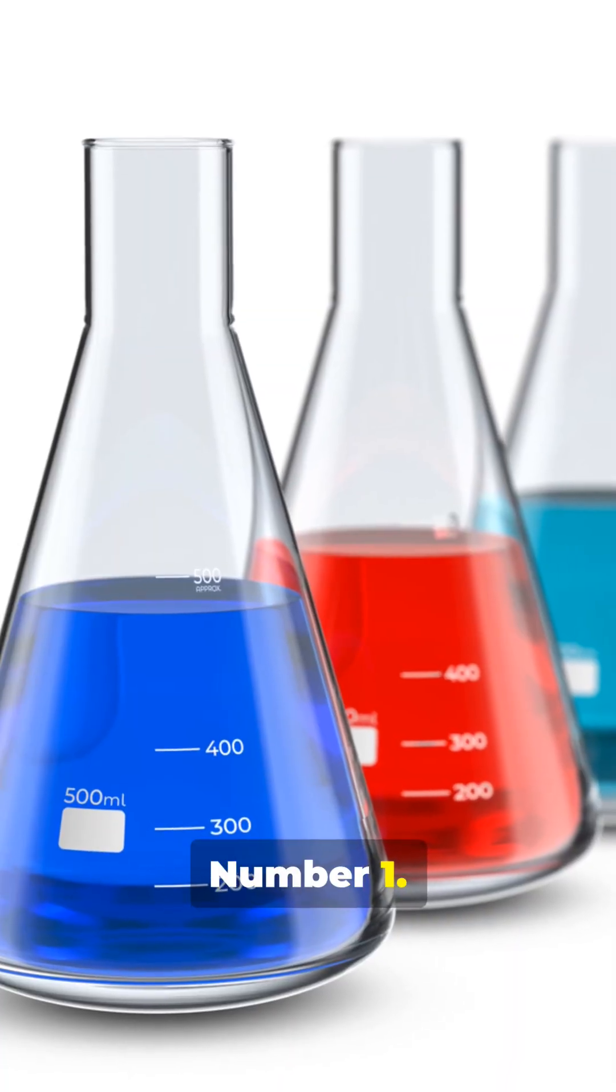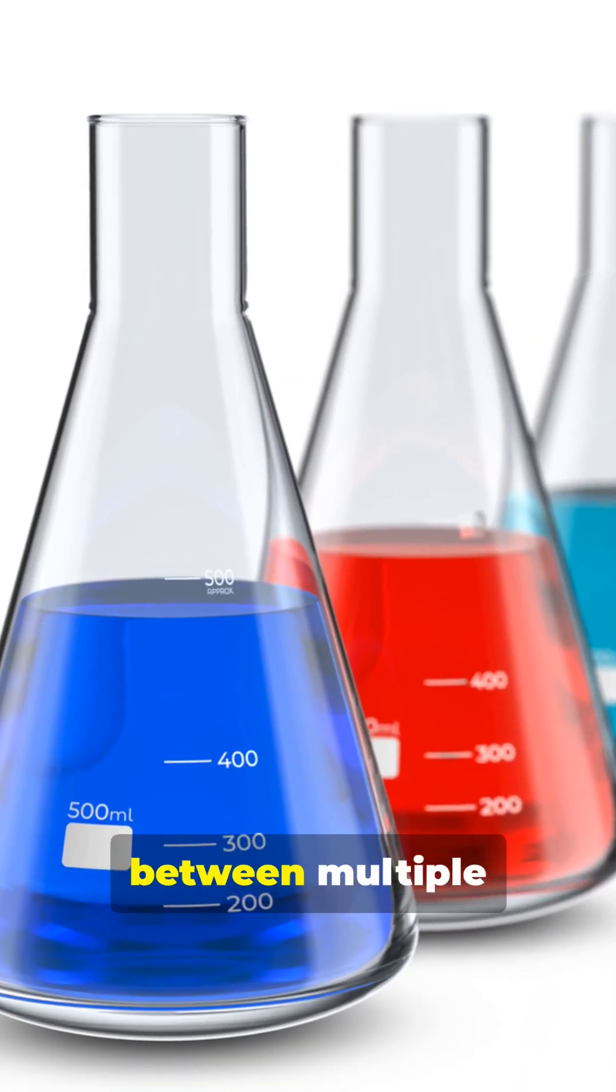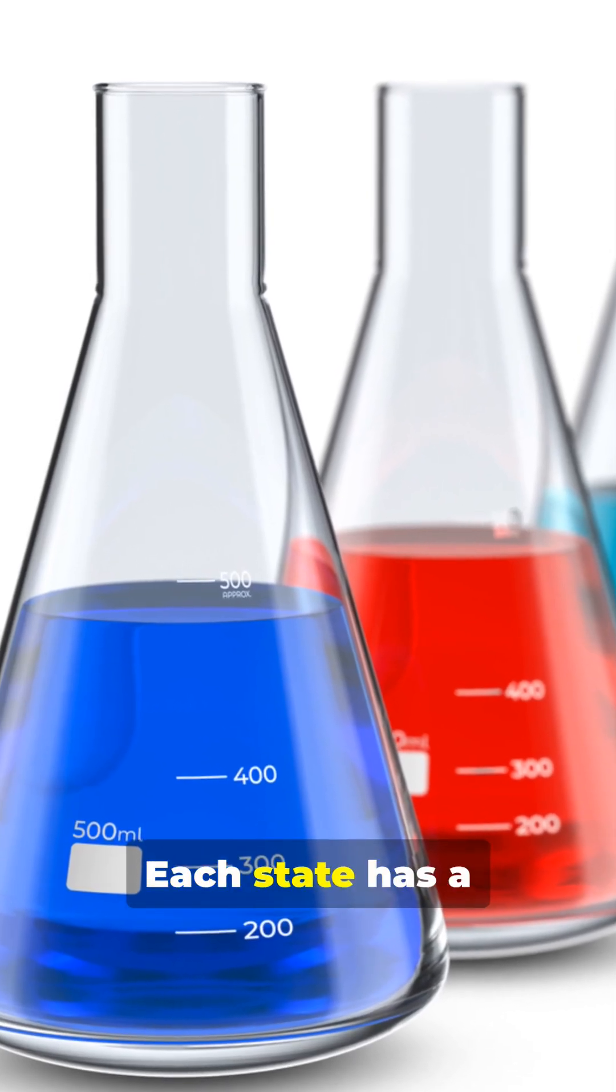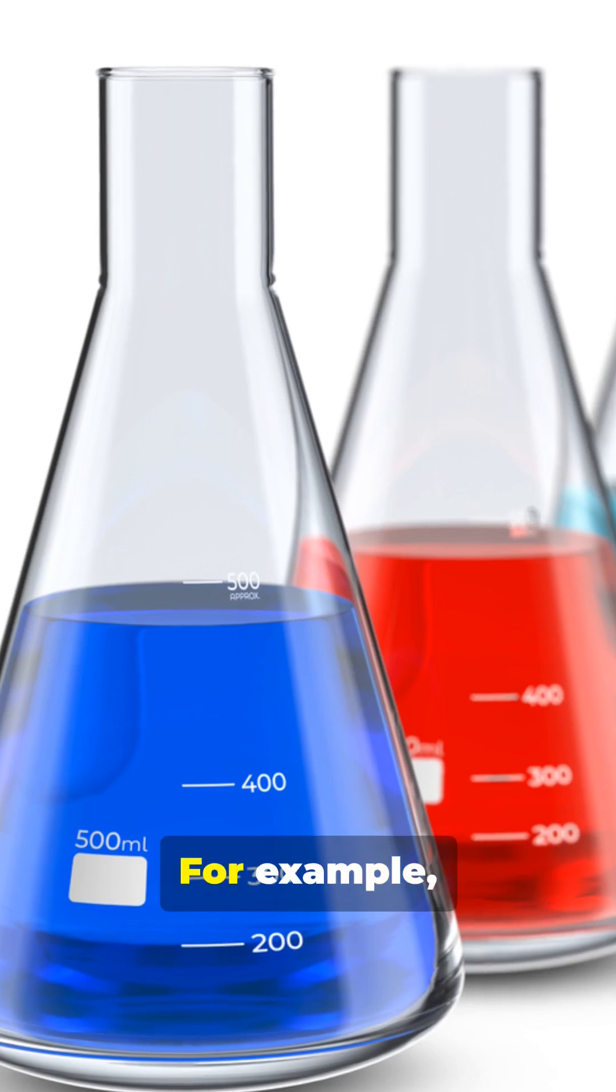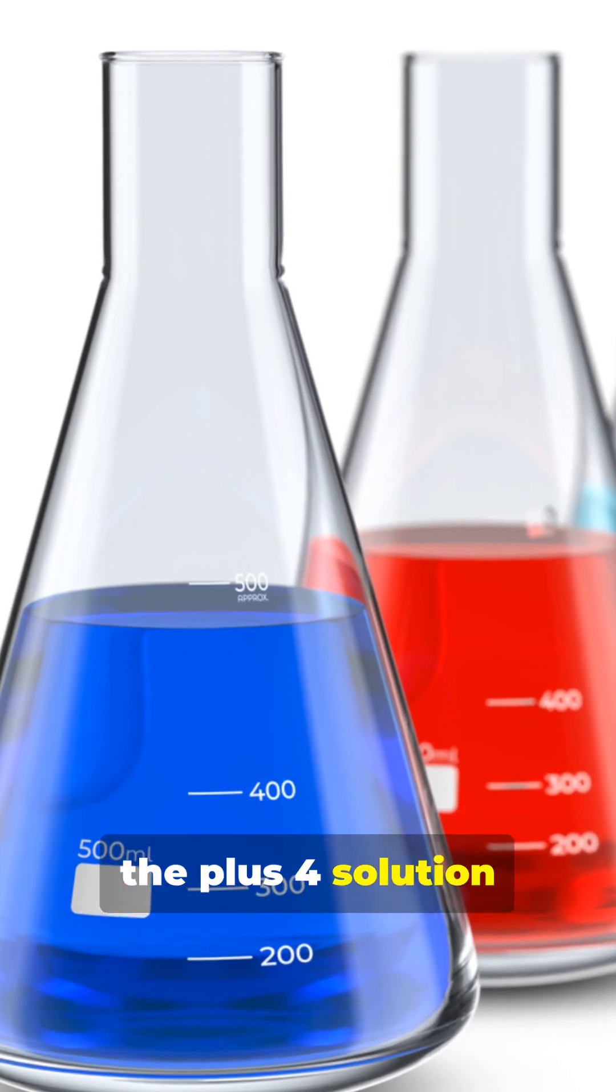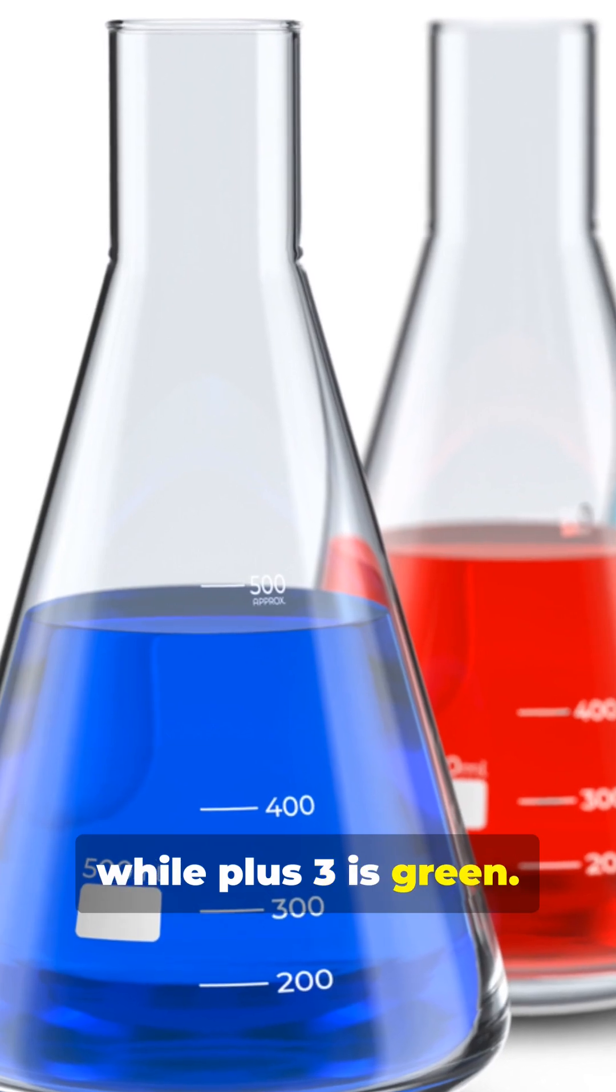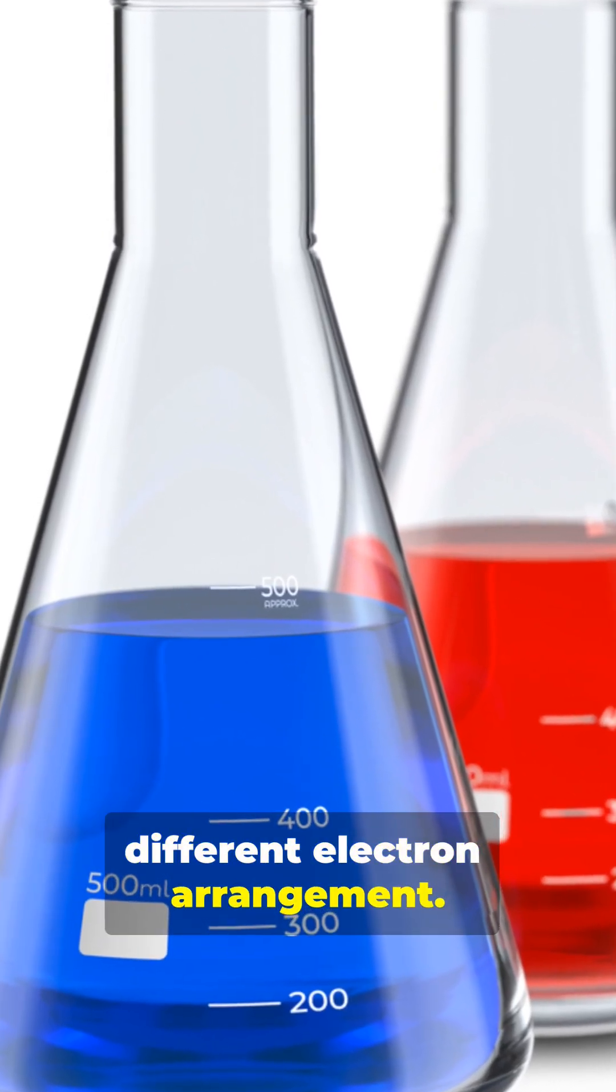Number one. When dissolved, vanadium can switch between multiple oxidation states. Each state has a different color. For example, the plus four solution is blue, while plus three is green. Each represents a different electron arrangement.